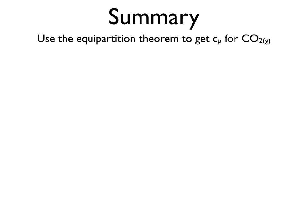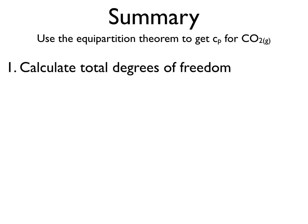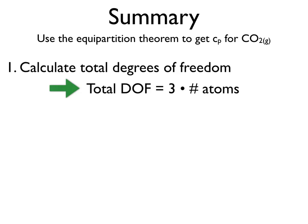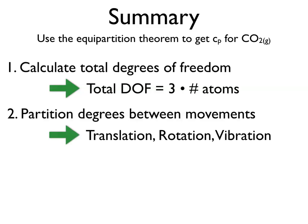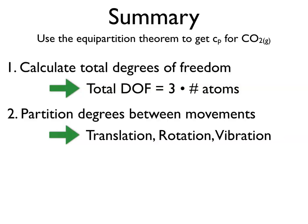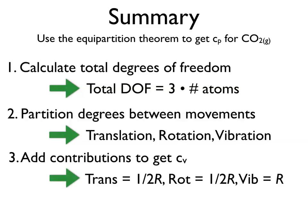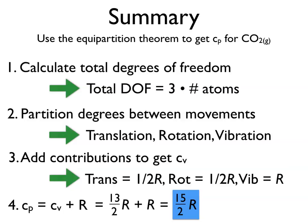In summary, to use the Equipartition Theorem to find the constant pressure heat capacity of CO2: first, determine the total degrees of freedom by multiplying the number of atoms by 3. Then partition those degrees of freedom between translations, rotations, and vibrations. Add up their contributions to get Cv, noting that each translation gives half R, each rotation gives half R, and each vibration gives a full R. Finally, add one more R to Cv to get Cp, which for this problem was fifteen-halves R.